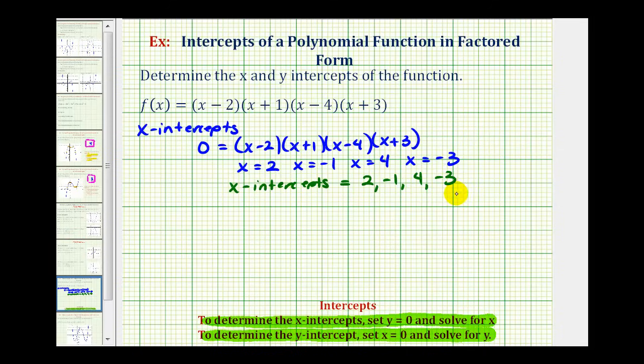Or we can also list them as ordered pairs, which I prefer. If the x intercept is two, the coordinates would be two comma zero. If the x intercept is negative one, the coordinates would be negative one comma zero.